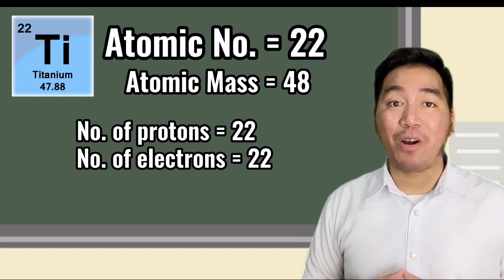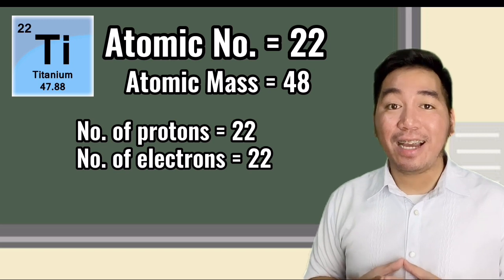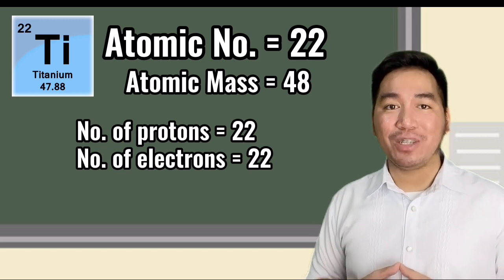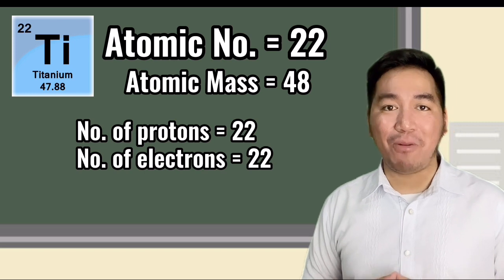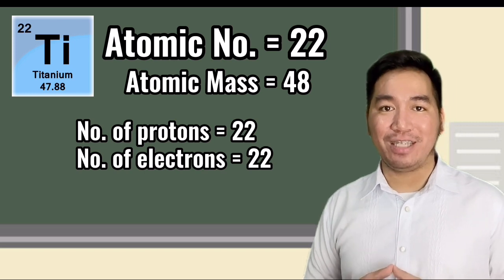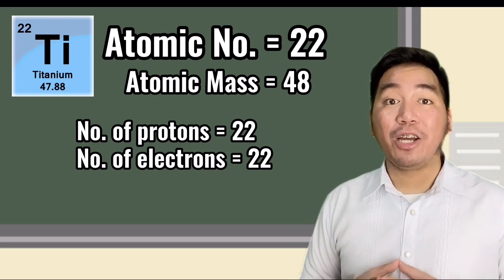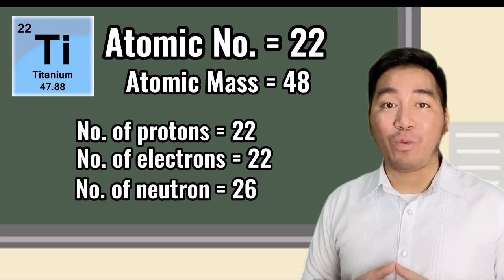What about the number of neutrons? As I said, the number of neutrons is equal to the difference between the mass number and the number of protons. Therefore, the number of neutrons is 26.